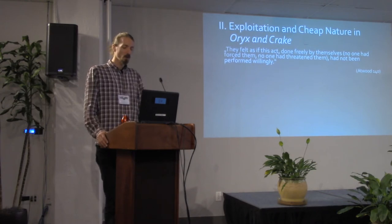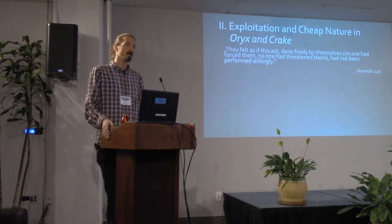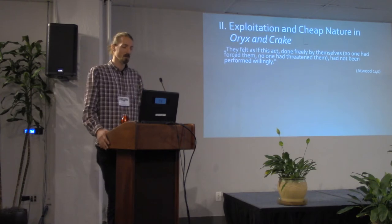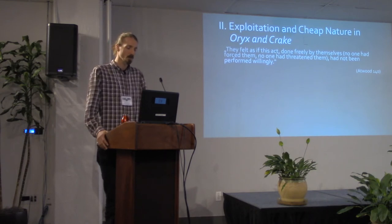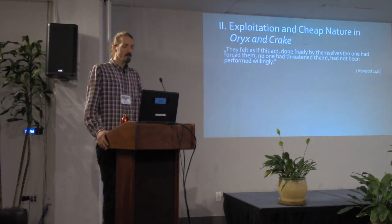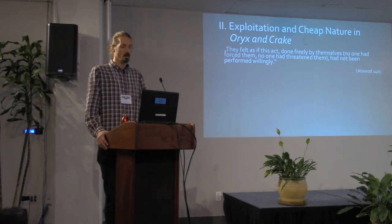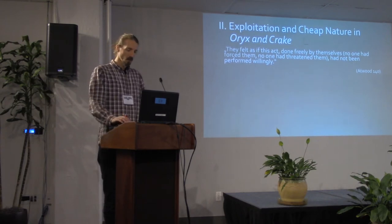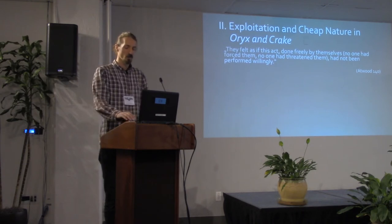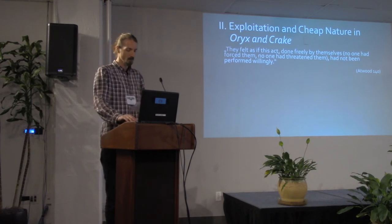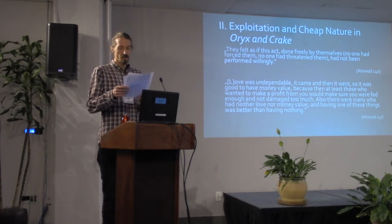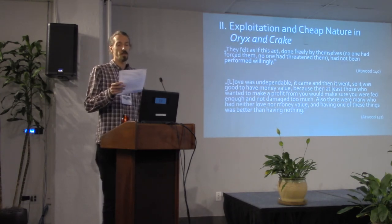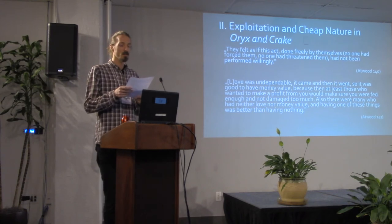In the moment of her sale, Oryx is integrated into capitalism — before, she's part of an agrarian society, and by being sold she becomes a part of capitalism. But she's not a producer; she's part of cheap nature, a product to be bought and used as a slave laborer. Perversely, however, her sale and her reduction to her exchange value is what, in her perspective, saves Oryx's life. For while she has to relinquish love and is forced into child prostitution, her value in the marketplace still works as a form of life insurance. Quote: 'Love was undependable, it came and then it went, so it was good to have money value, because then at least those who wanted to make a profit from you would make sure you were fed enough and not damaged too much. Also, there were many who had neither love nor money value, and having one of these things was better than having nothing.'